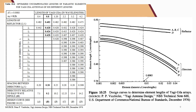Table 10.6 shows the optimized uncompensated lengths of parasitic elements. From the design parameters including the target directivity, we can estimate the spacing between directors. The spacing between the reflector and the feeder is fixed at 0.2 lambda. The table provides the lengths of the directors and tells us how many elements are needed based on the specification, as well as the length of the reflector and the overall length of the Yagi-Uda structure.